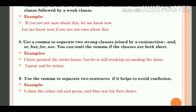Next rule: use the comma to separate two sentences if it helps to avoid confusion. जब दो sentences को separate करना हो और comma से confusion दूर हो जाए, तो comma use करना चाहिए. For example: 'I chose the color red, and green and blue was his first choice.' — अगर 'red' के बाद comma नहीं लगाते, तो meaning unclear हो जाएगा — ऐसा लगेगा कि I chose red, green and blue. But with the comma, meaning clear है: मैंने red choose किया और उसकी पहली choice blue थी. So, पूरा confusion comma लगाने से खत्म हो गया.